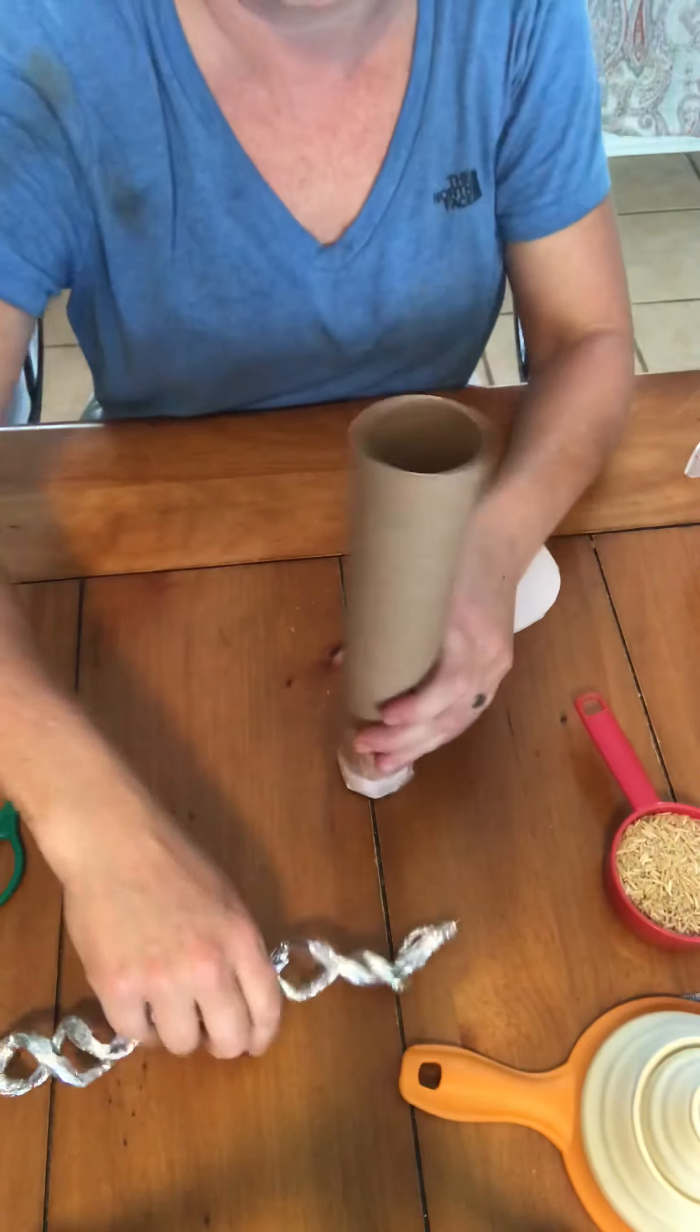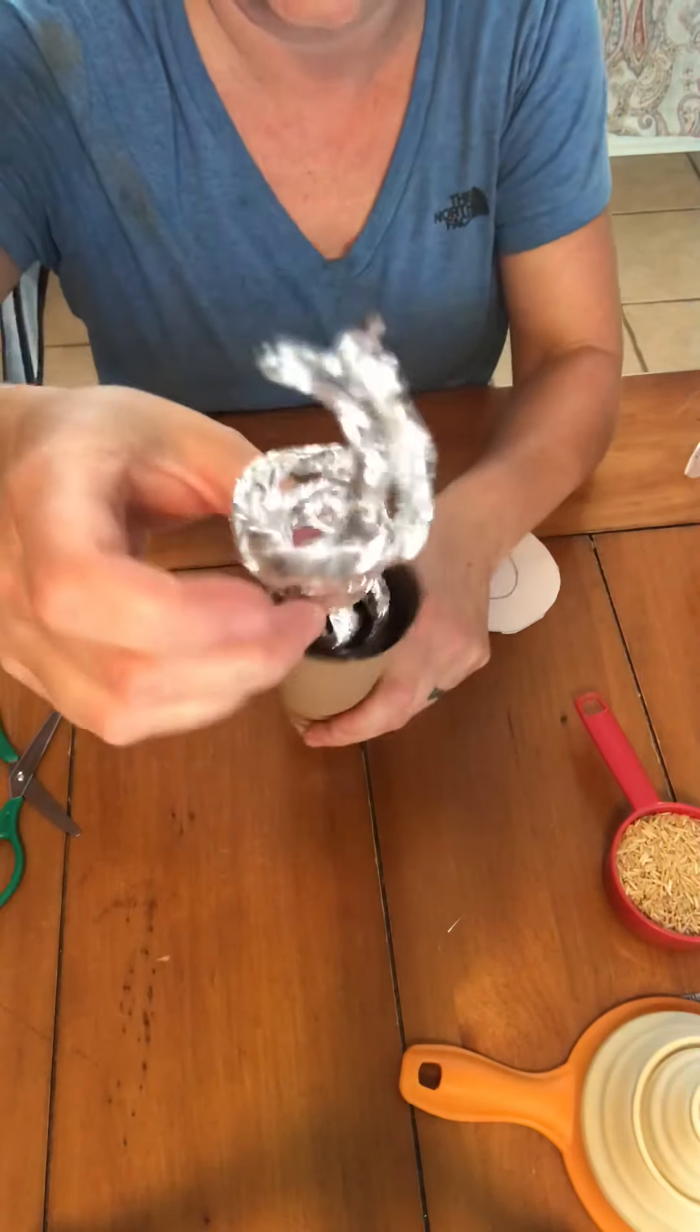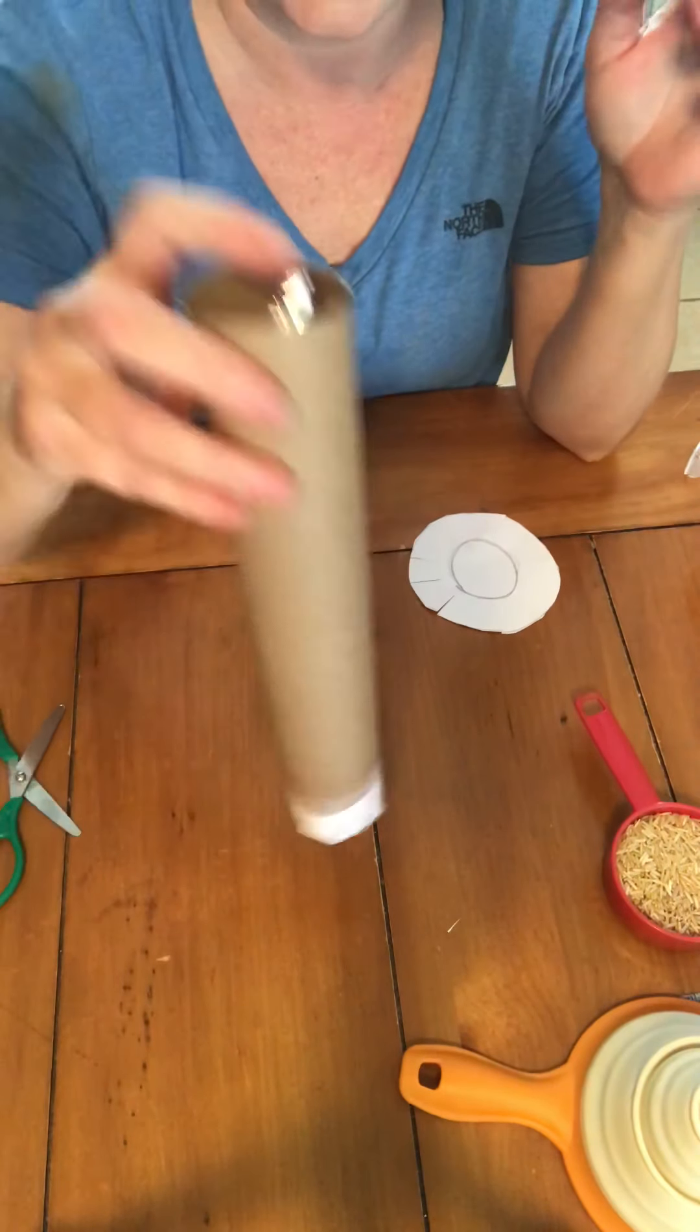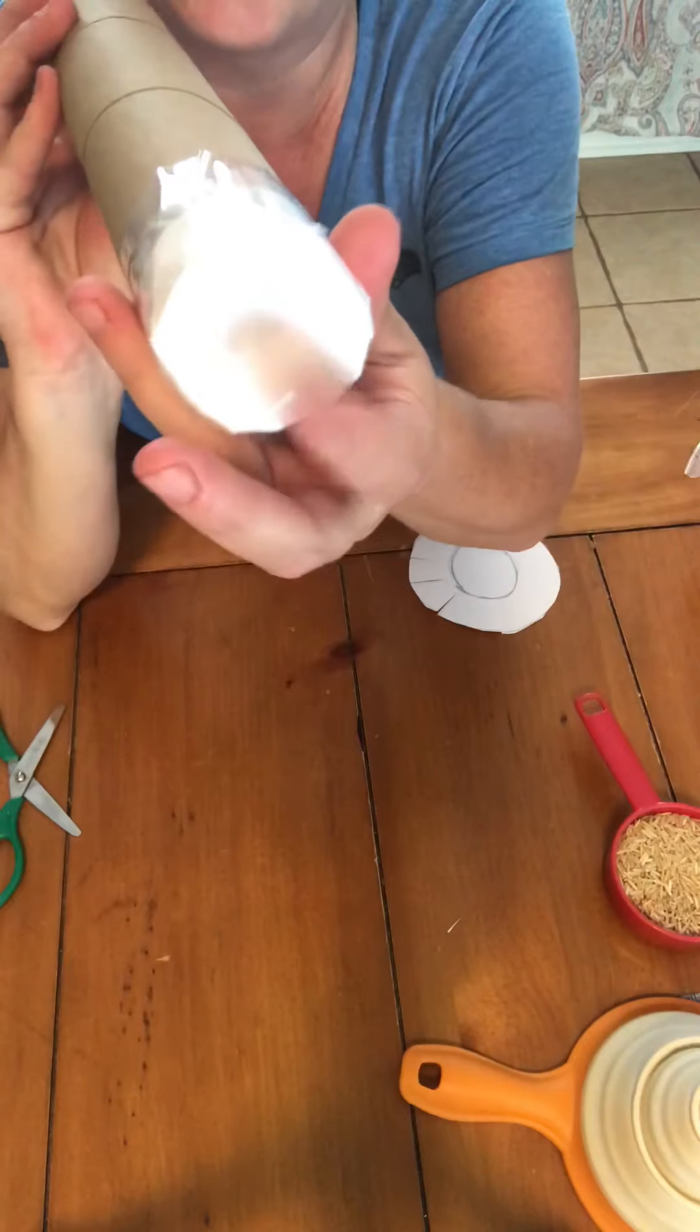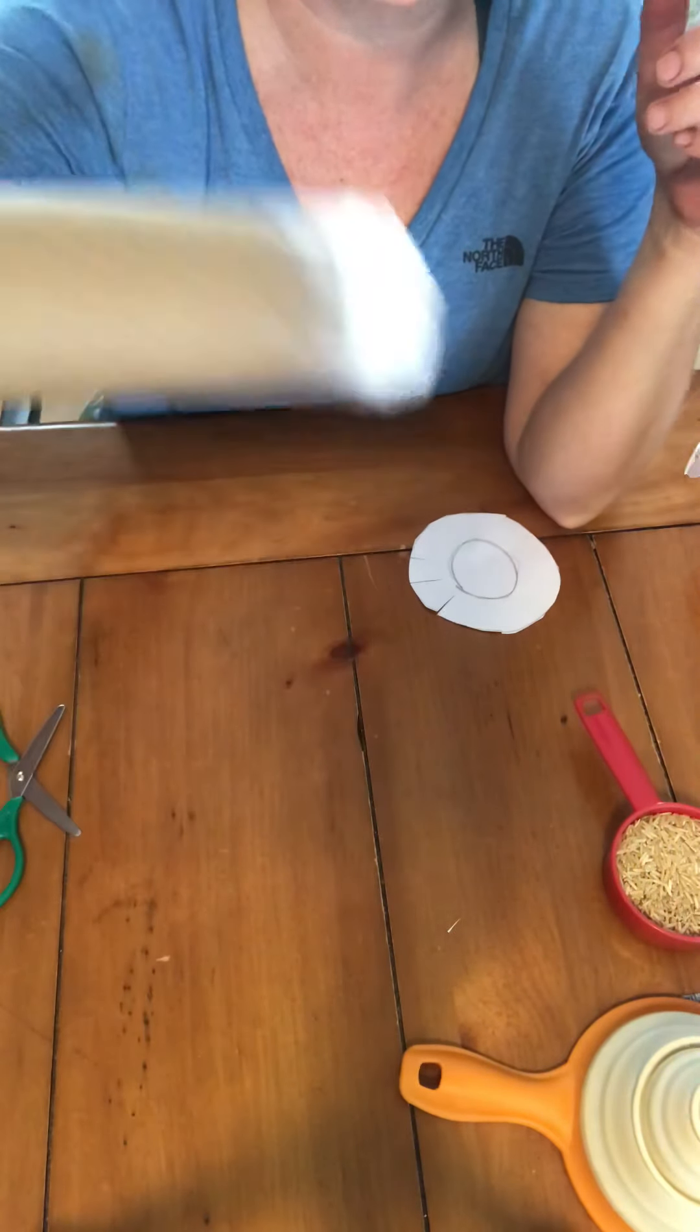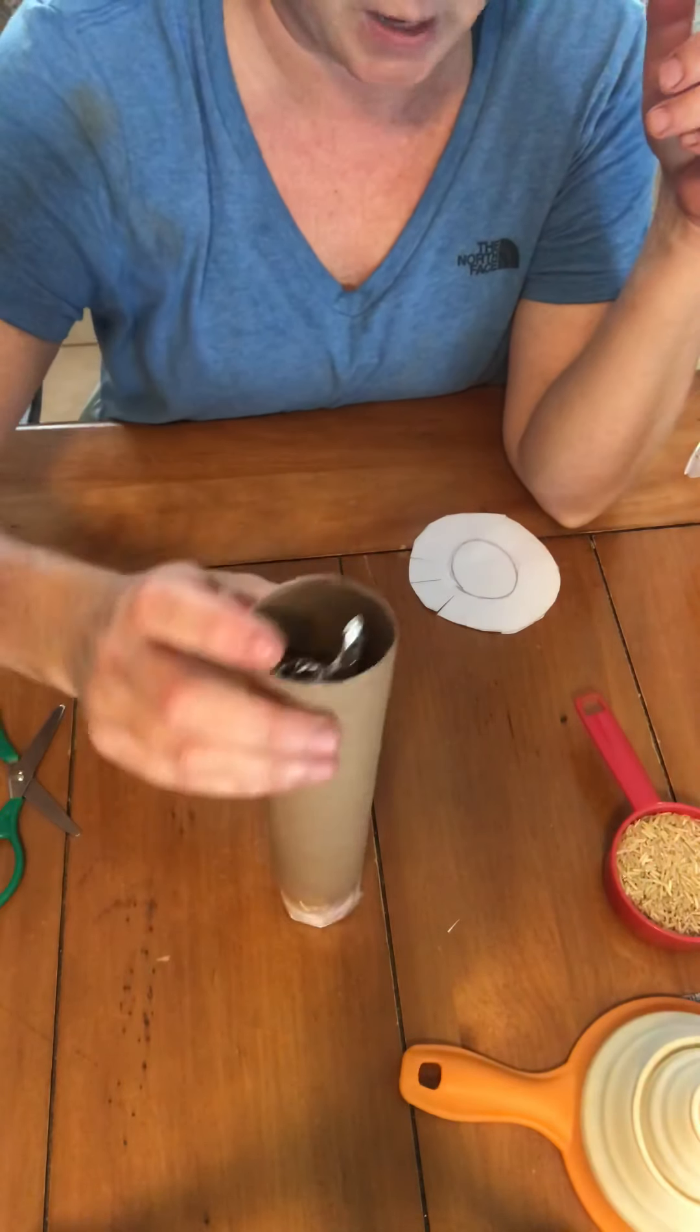Now what you're going to do is you're going to take your aluminum foil coils, drop it right down in just like that. And one of the reasons why you want to definitely tape the bottom is so that your aluminum foil coil might be a little sharp at the end so that it doesn't come popping out of the bottom and rip the paper.